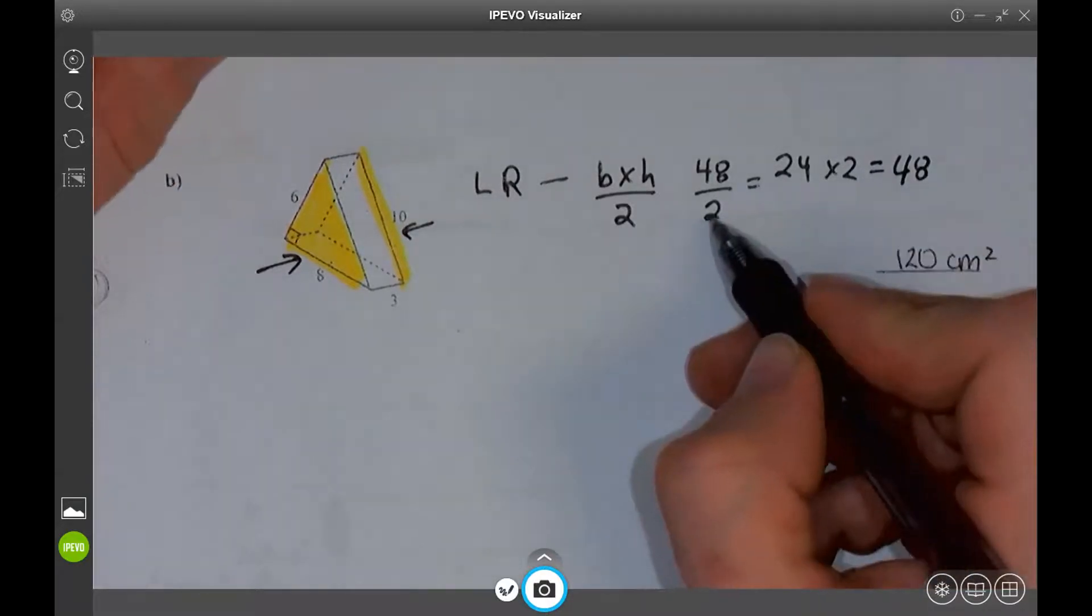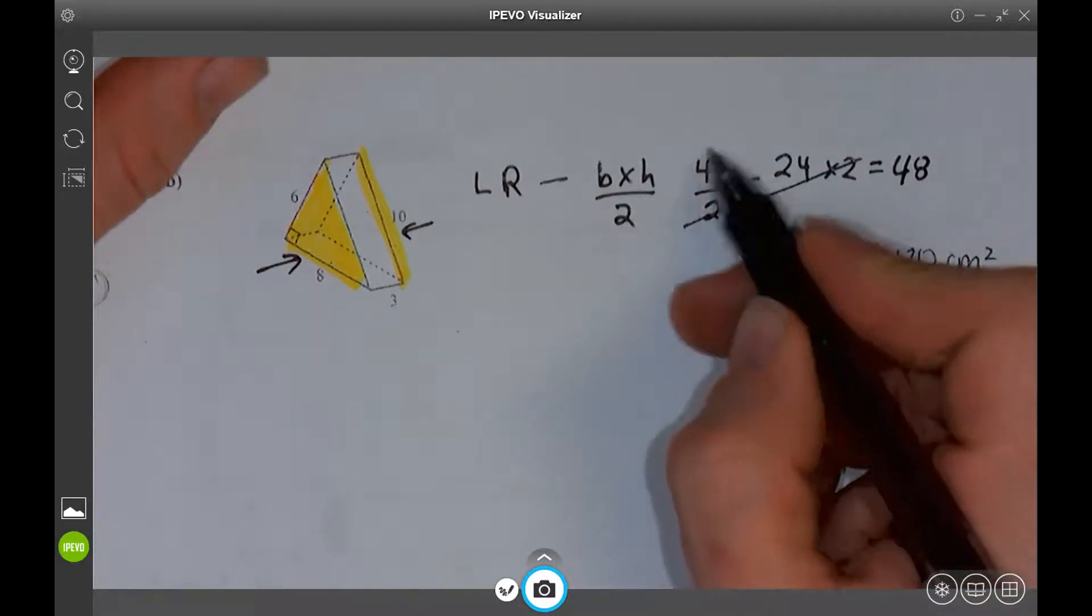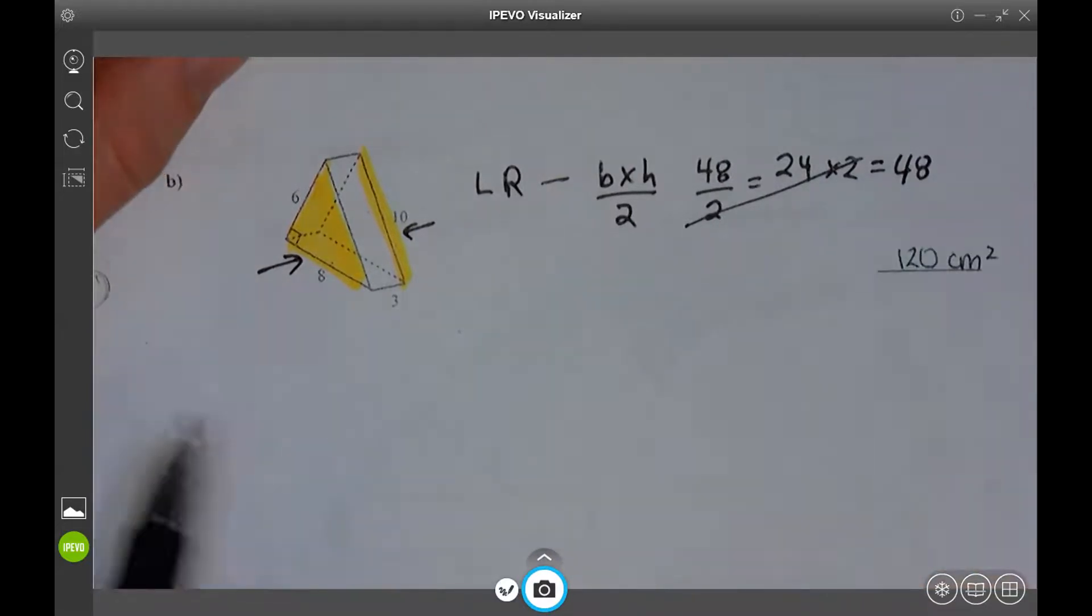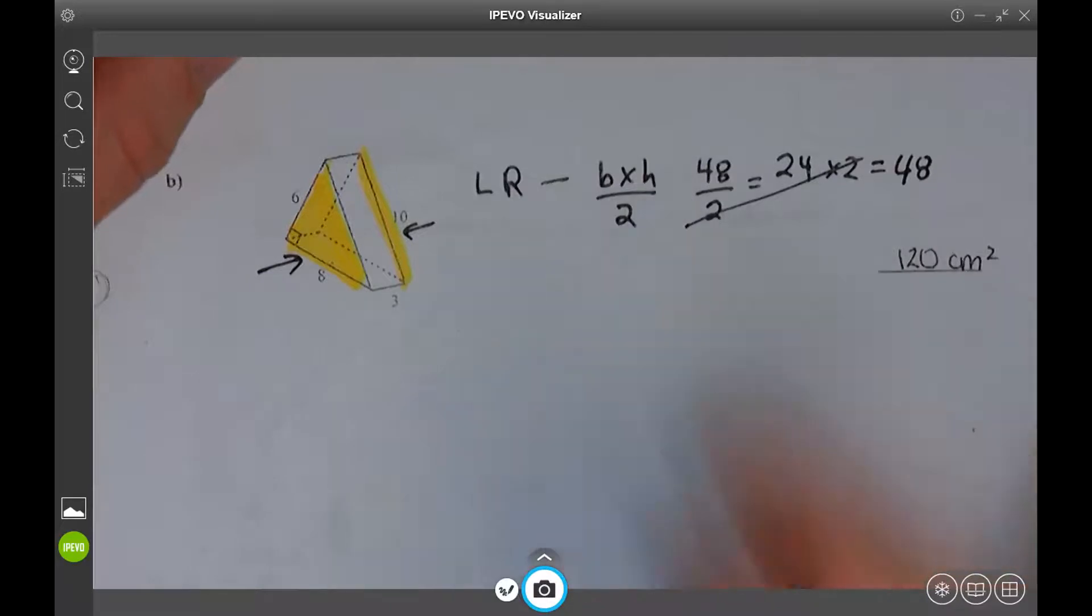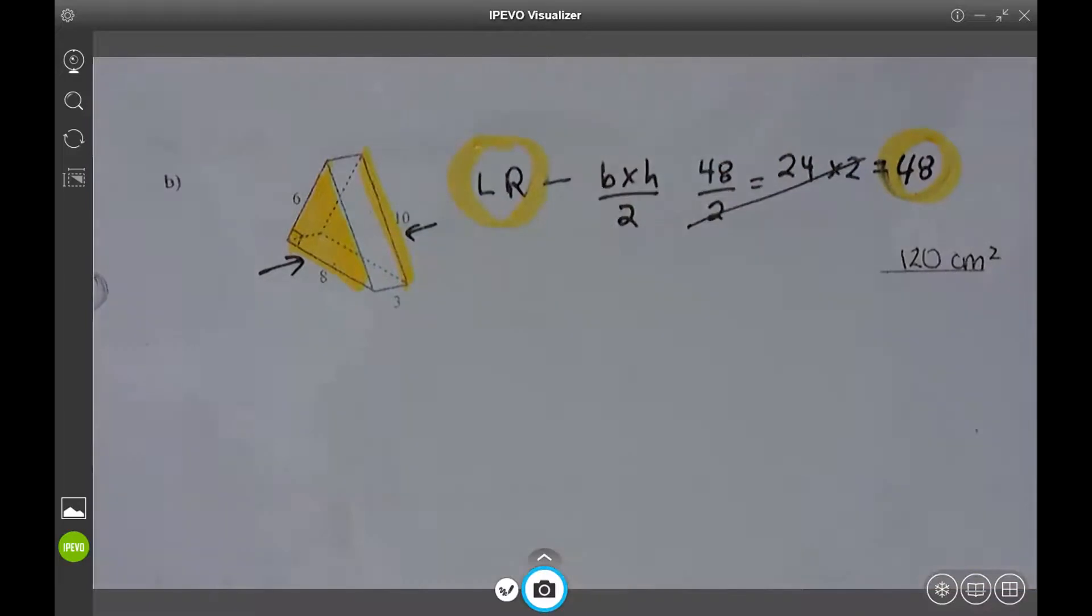So instead of dividing by 2 and multiplying by 2, sometimes you can cancel this step and just remember that it's 48. But it's a good habit to get into doing the calculation. So I have for my left and right, both of those yellow, the answer 48.